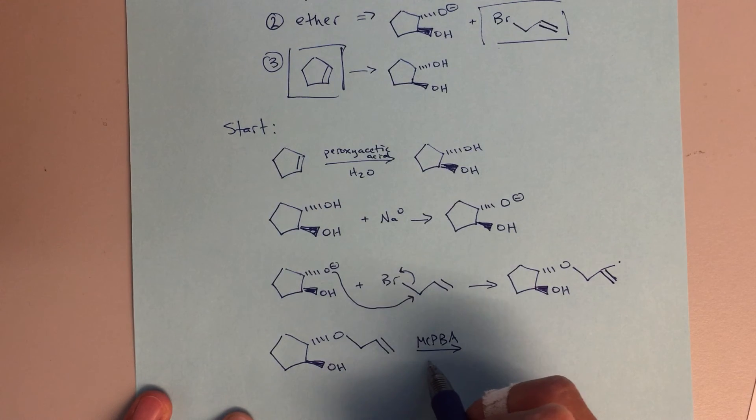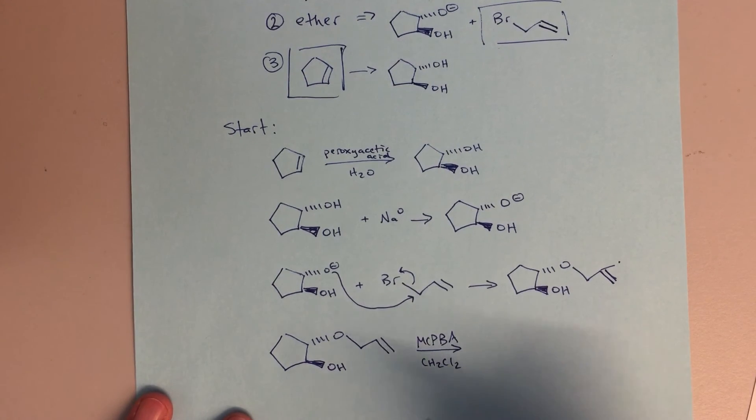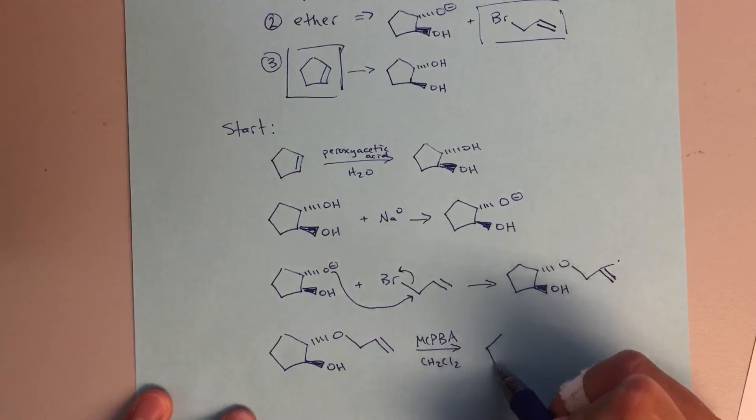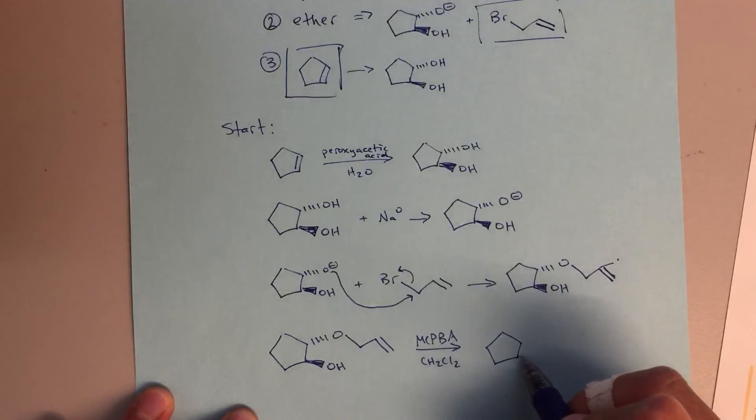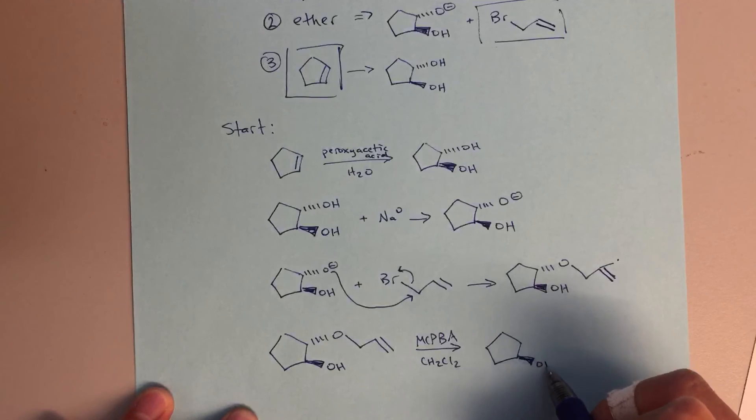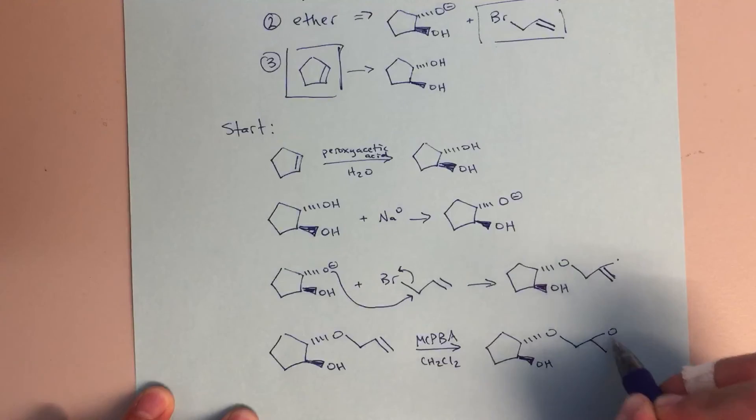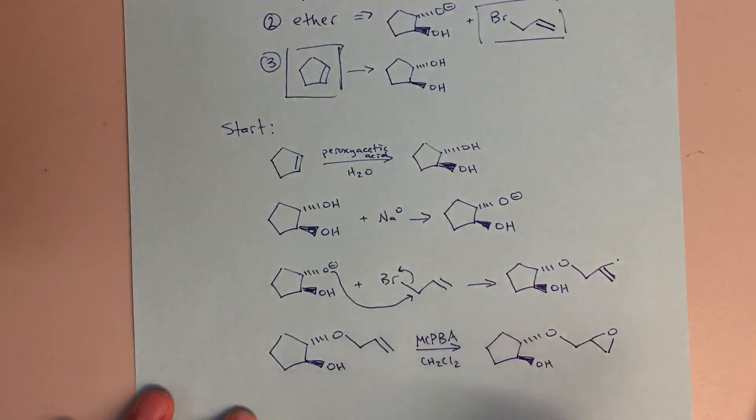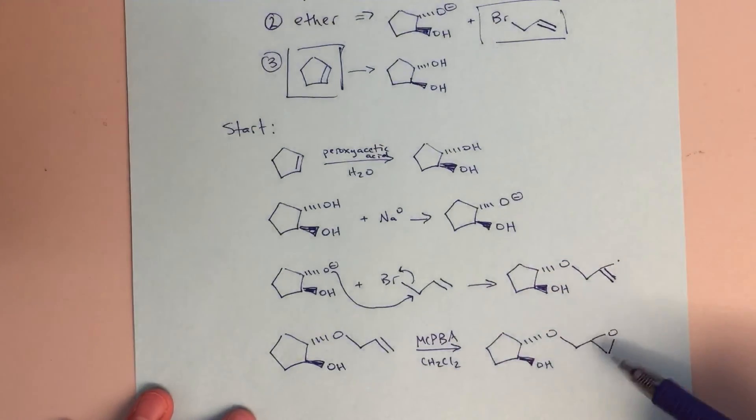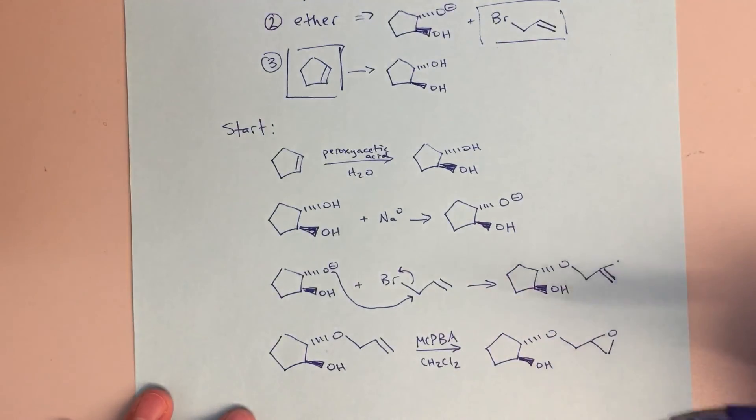So using MCPBA, and here really we don't need to specify the solvent. If we just write dichloromethane that's good. It's better definitely to write an inert solvent just so we all are on the same page. We know that we're going to stop at the desired epoxide. If we had H+ down here, H+ would then catalyze that ring opening to reform a diol, but that's basically it. We've successfully worked our way through here.